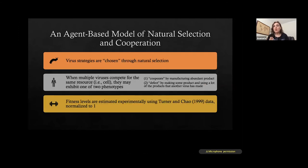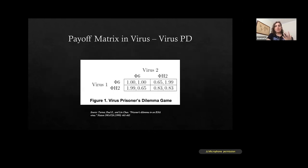If mutants are less fit than those that are playing the equilibrium strategy, then the equilibrium is an evolutionarily stable strategy. And the most important thing when we can think about applying game theory is that human-like cognition is not necessary for game theory. So that's why we can have virus-virus games and we can apply this for artificial type of entities. So if we are looking at an agent-based model of natural selection and cooperation, we can look at whether the virus strategies are chosen from natural selection. When multiple viruses compete for the same resource, for the same cell, they may exhibit one of the two phenotypes. One of them cooperates by manufacturing the abundant product, the second one they defect, by making some product and using a lot of the products that another virus has made. So there is this constant interplay of cooperation and defection between the viruses.